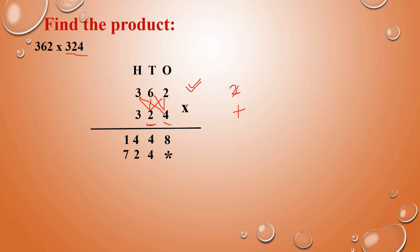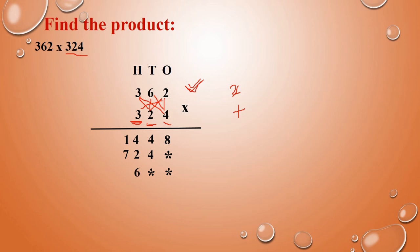So the tens-place partial product is 724. Next, the hundreds place digit 3 is there. Now this 3 we have to multiply with 362. Since 3 is in the hundreds place, the answer we are going to write in the hundreds place. So two places are empty — you can write 0 or stars there. Now 3 into 2: that is 6.